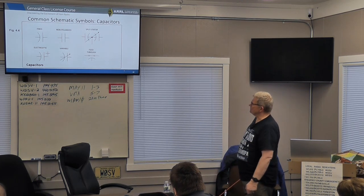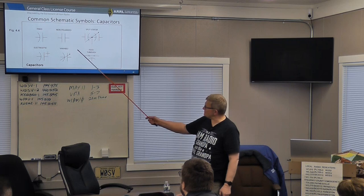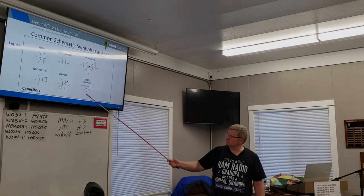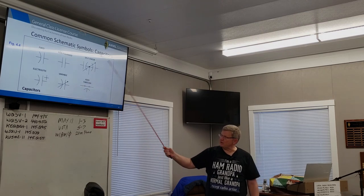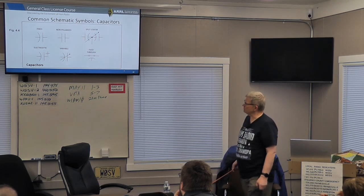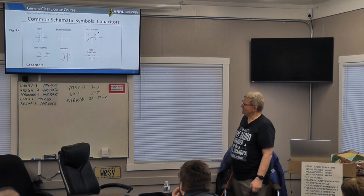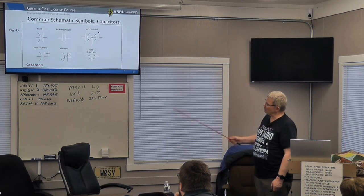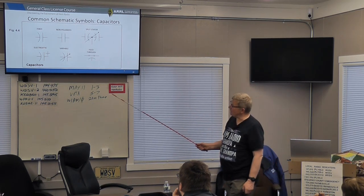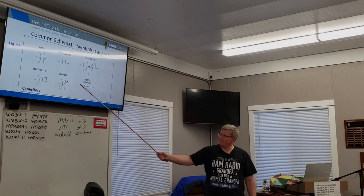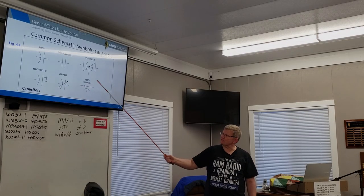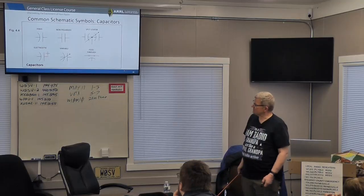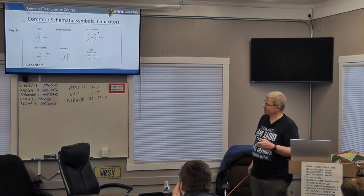For capacitors, the different kinds include fixed, polarized, feedthrough, variable, and electrolytic. You notice the shape that is common — it looks like a backwards C, or a C shape on most of them. Some look like a C, some are variations, but there's a C shape for capacitors.